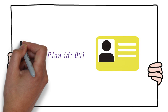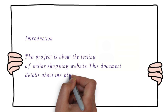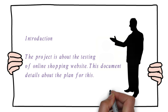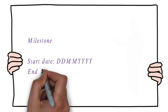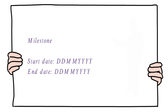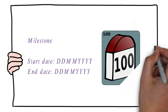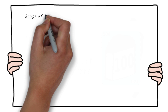In our case, the test plan ID can be 001. The next component is introduction, where the details about the project are defined — what the project is about and how it should happen. The next component is milestone. Here, start and end dates would be defined for the project. In the case of a master test plan, the start and end dates for each test level need to be defined. In our example, we need a start and end date for the online shopping website testing. The next component is scope of testing, where features to be tested and not to be tested are defined.